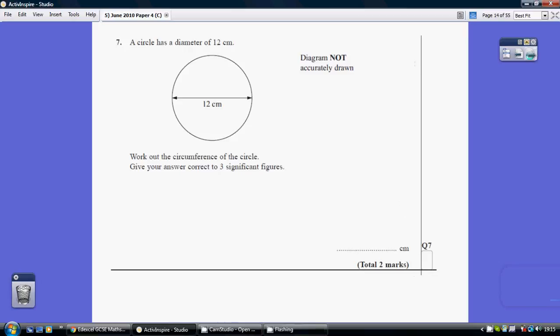Question 7. Well, it's a circle question, so the first thing you want to do is write down your two circle formulae.